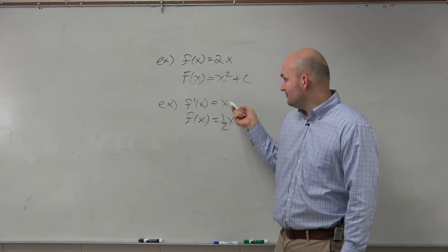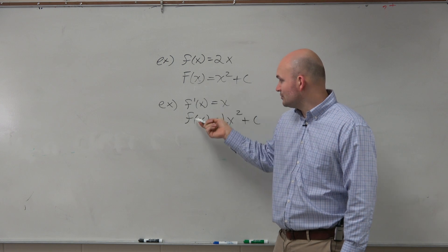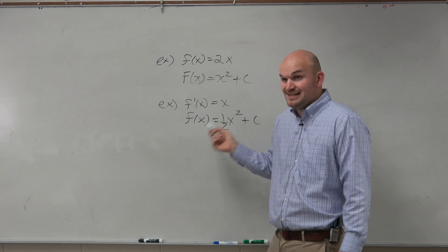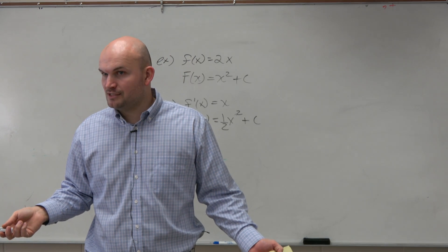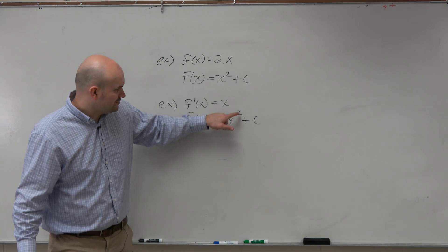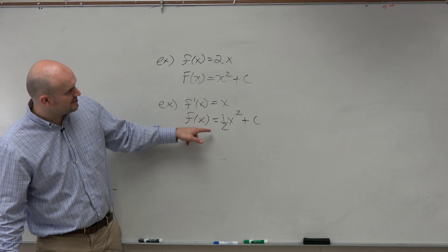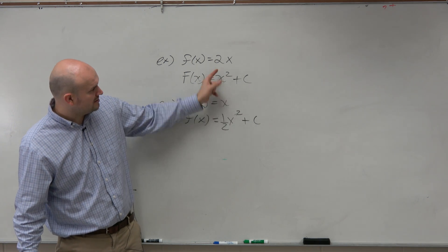And then make sure you add your constant. So the antiderivative of x is going to be f of x equals 1/2 x squared plus c. What's the great thing about antiderivative? You can just go ahead and check your answer by taking the derivative. Take the derivative, bring down the 2. 2 times 1 half is 1, x minus 1 is 1, so it equals x.